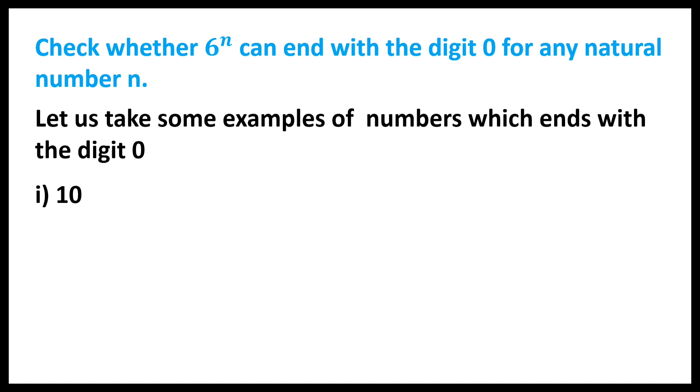First example is 10. Prime factorization of 10 gives 2 × 5. The next example is 50, which equals 2 × 5 × 5.